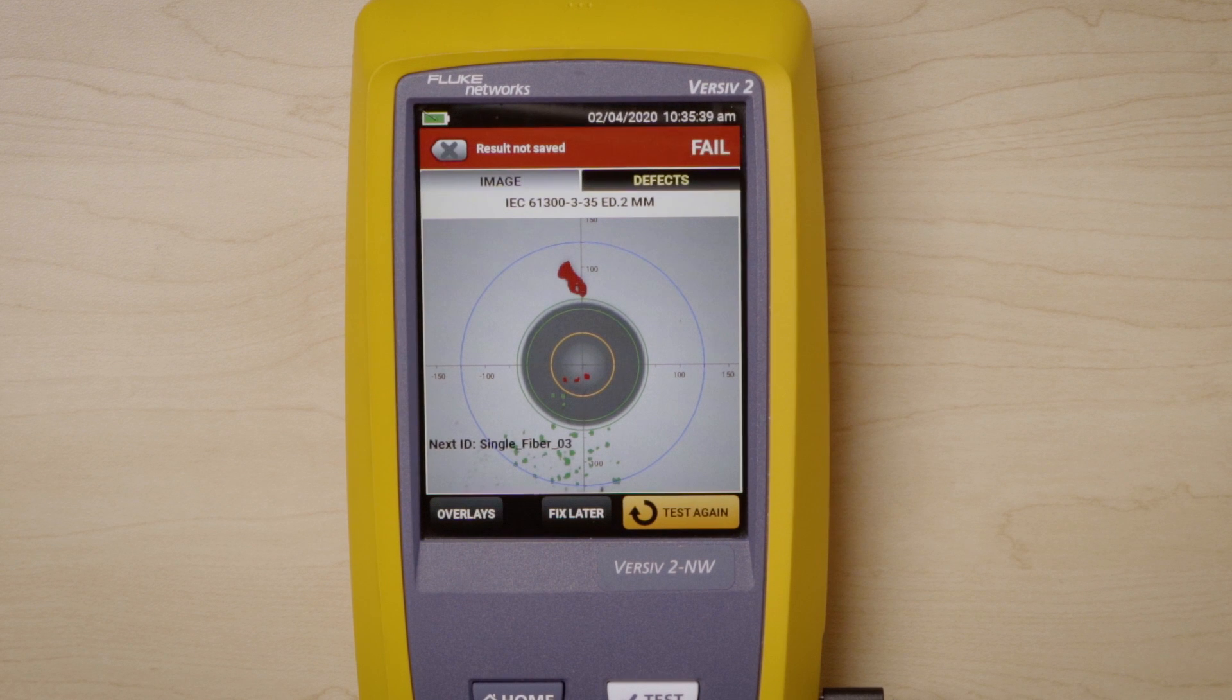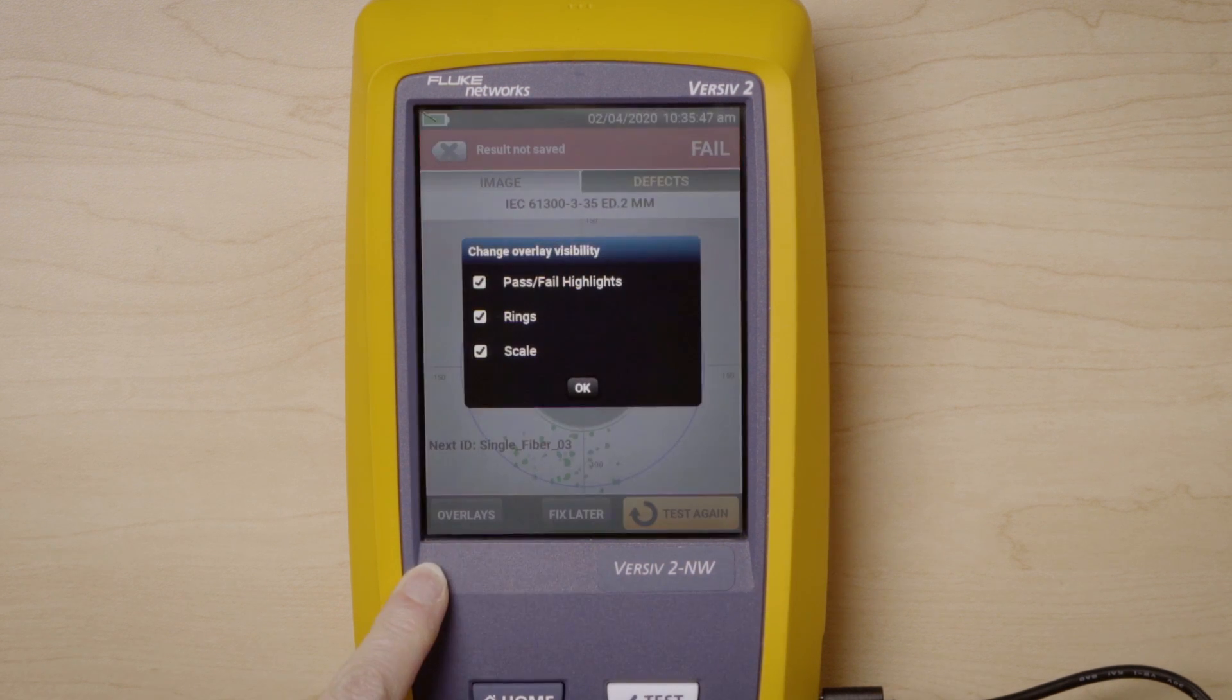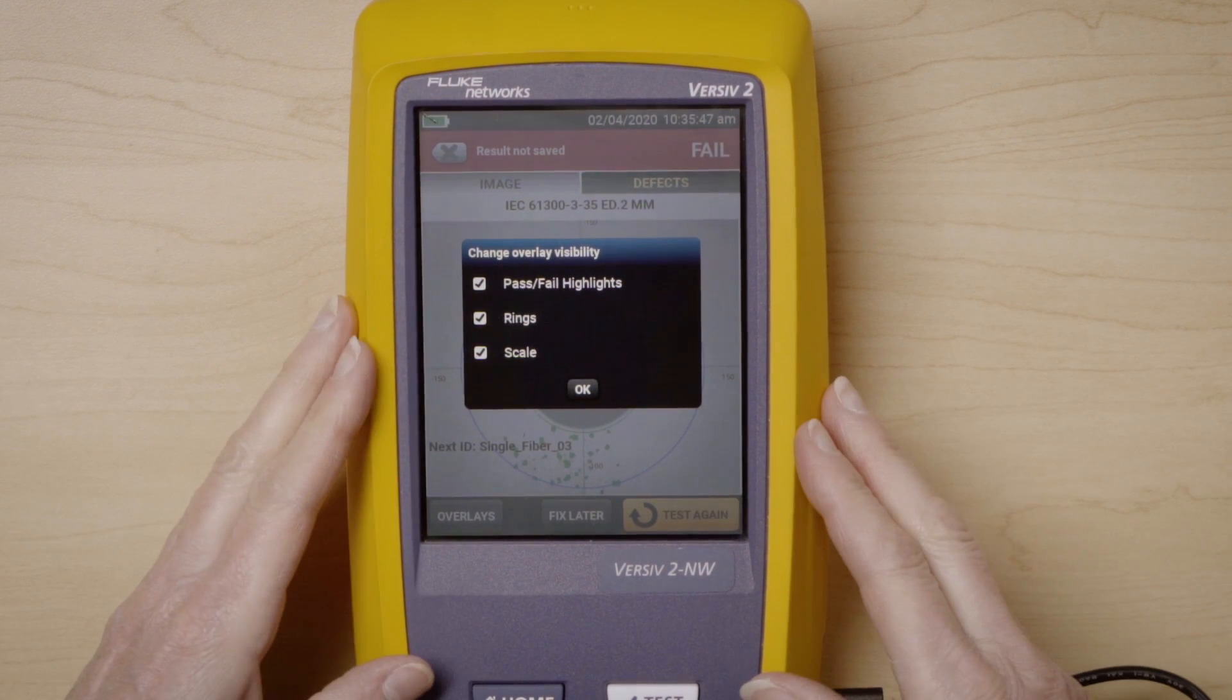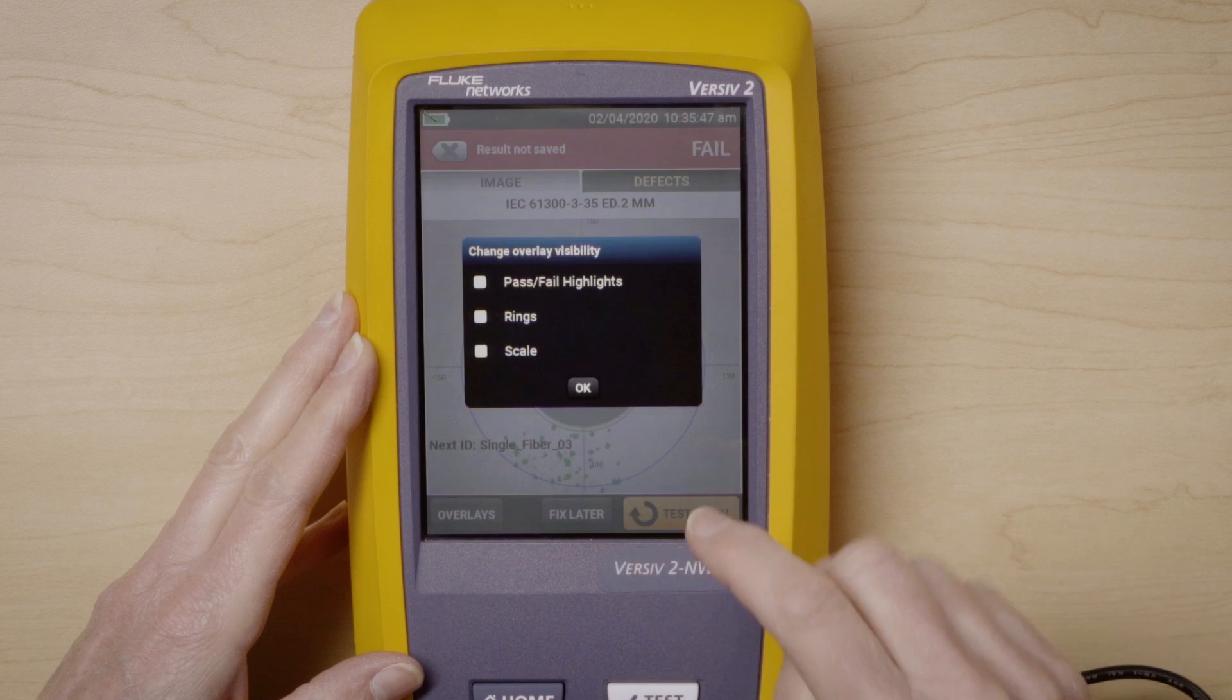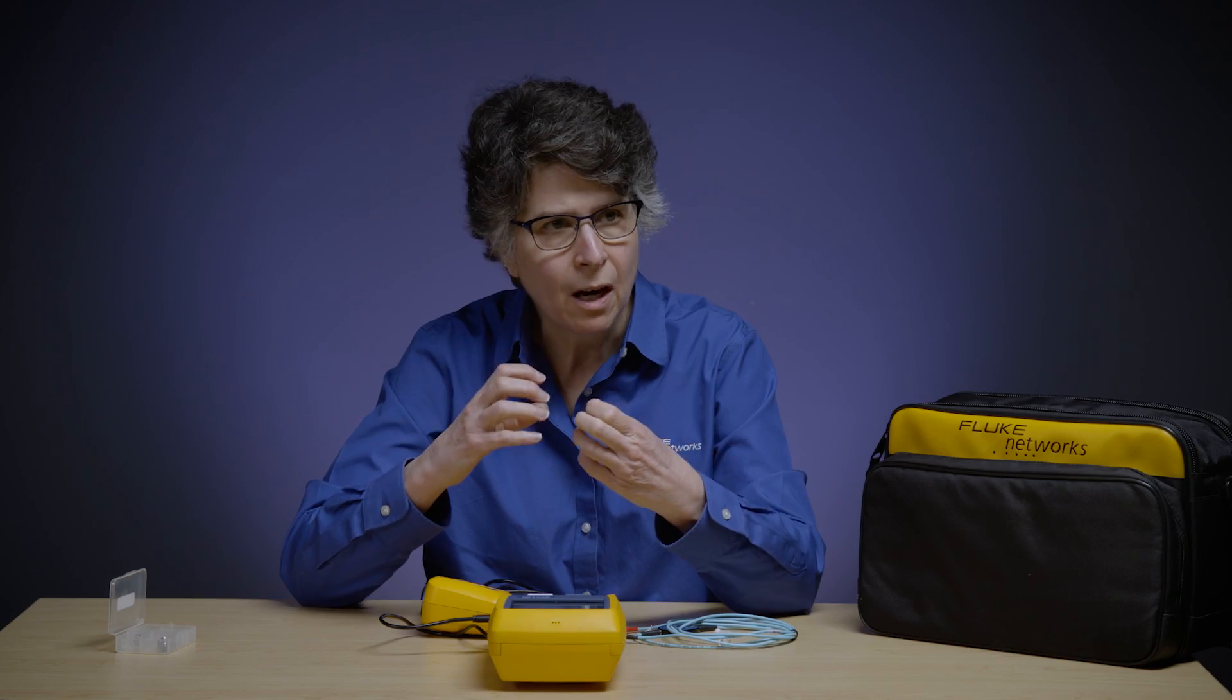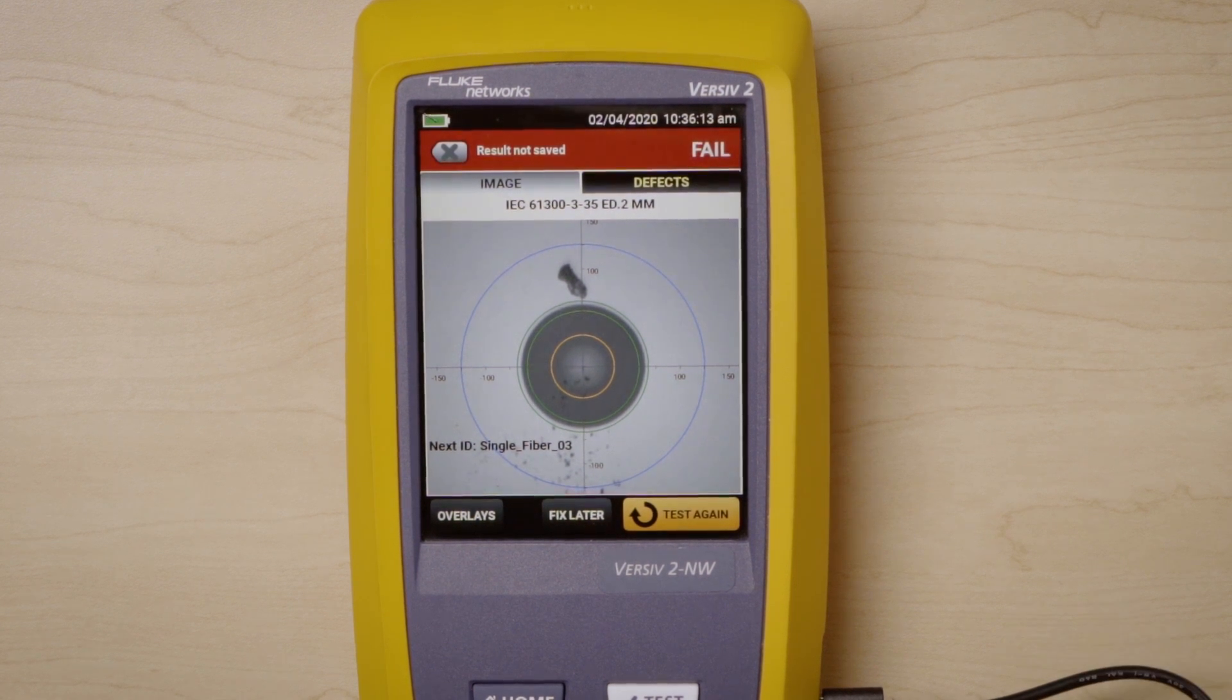But the other nice thing that we have is we have some really cool options. So you see down below, it says overlays, fixed later, test again. If I press the overlay button, I can now change what I see on the screen. Maybe I don't want to see the pass fail highlights or the rings or the scale. I just want to see the image itself. So I can click those off, say OK, and now I have a high resolution version of that image. Really nice if I want to see the details. But maybe I do want the scale and the rings. I can go ahead and put them on and turn things on or off. So it makes it very nice.